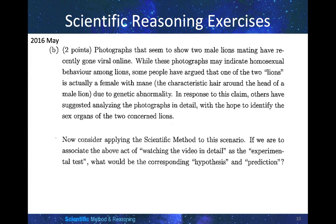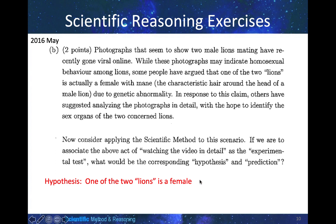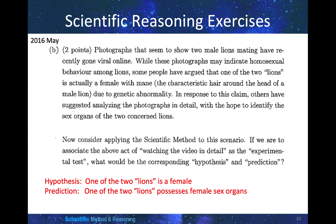Now, consider applying the scientific method to this scenario. If we are to associate the act of watching the video in detail as the experimental test, what would be the corresponding hypothesis and prediction? We can see that some people have argued that one of the two lions is actually a female — this argument is a proposal to explain the phenomenon, and this is why the hypothesis is: one of the two lions is a female. So what is the prediction? If it is a female, then it should possess female sex organs. And that's why the experiment is watching the video in detail — we will watch the video and see whether we can find female sex organs.